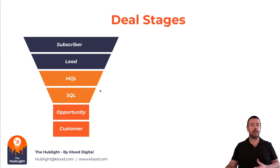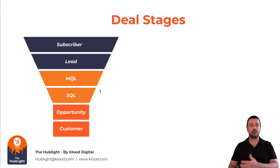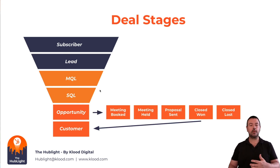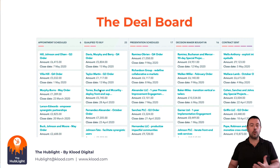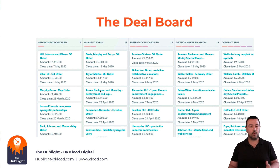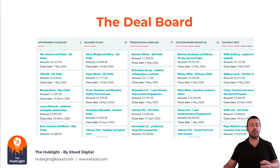Now let's move on to the opportunity or deal stages. A deal record is a separate record type and you can set the deal stages to match your sales process. For example, you might have stages for booking a meeting, holding a meeting, sending a proposal, and Closed Won and Closed Lost statuses. Or you might add extra stages like Qualified, Qualified to Buy, Presentation Scheduled, Decision Maker Bought In, and so on. There's no right or wrong, but my advice is not to over-complicate this — keep it as simple as you can.